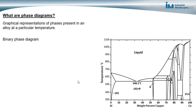So what are phase diagrams? They are graphical representations of the metallurgical phases that are present in an alloy at a particular temperature. The phase diagram shows temperature versus alloy composition and the different phases that are present for a particular alloy composition at any particular temperature.